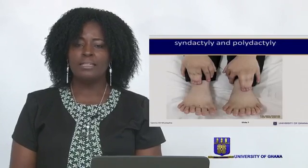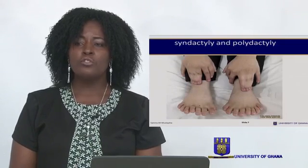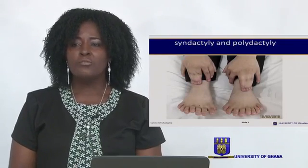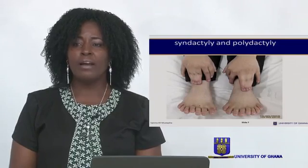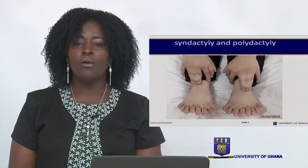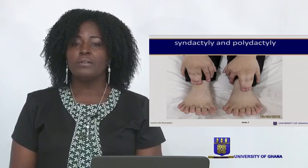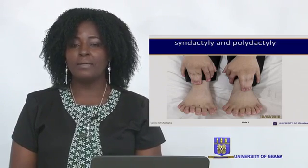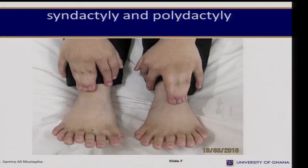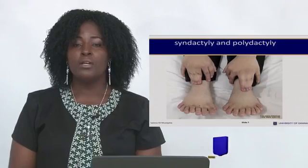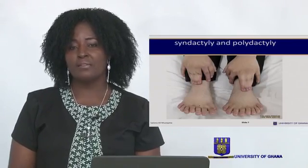Usually around us, we see children with an extra digit that seems non-functional and hanging on or attached by skin — that is also a form of polydactyly. Looking at the picture again, you can see that some of the fingers have been fused together, and this fusion is more central. When we discuss the types, you will see various variations.